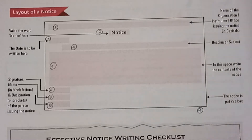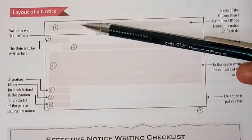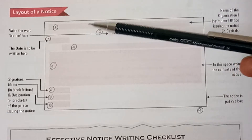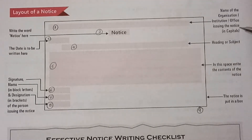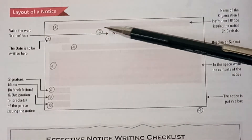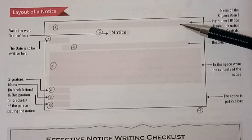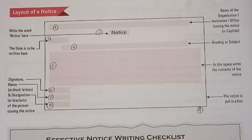So after that, the very first thing you have to do at the topmost is you have to write the name of the organization or the institution or the office issuing the notice. Suppose if your school is giving the notice, you have to write the name of your school — Sacred Heart Convent Senior Secondary School — here. And it can be any organization, any institution, depending upon the question.